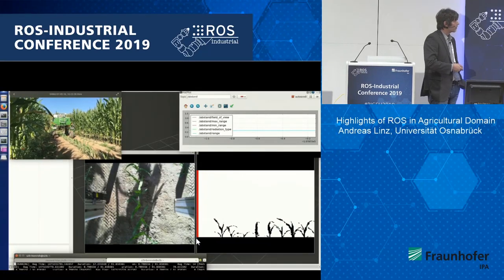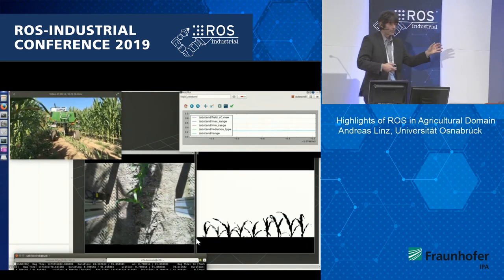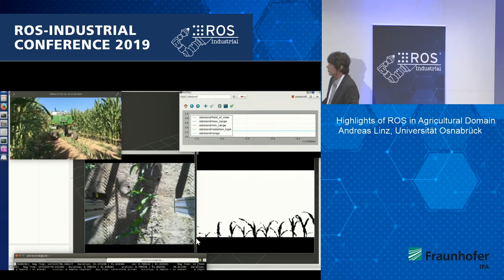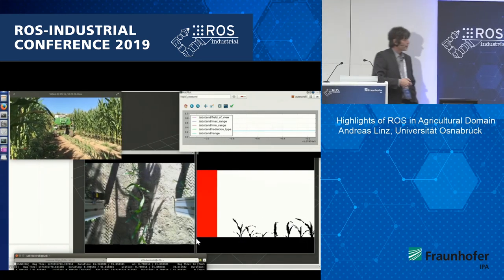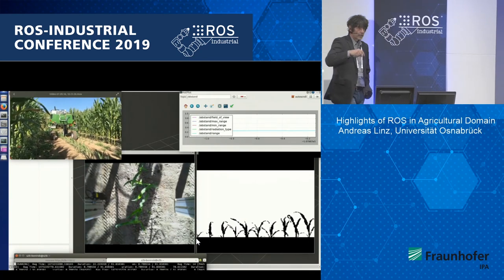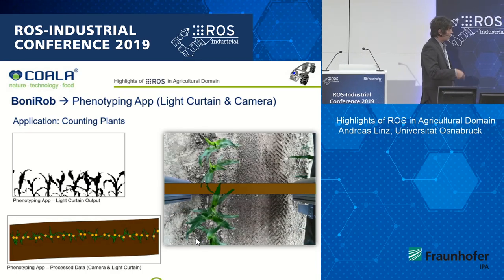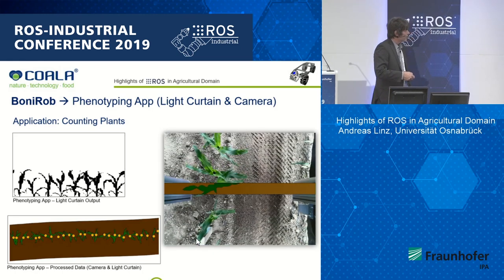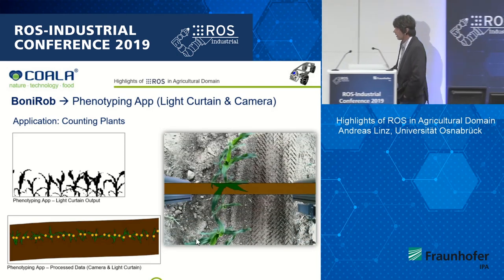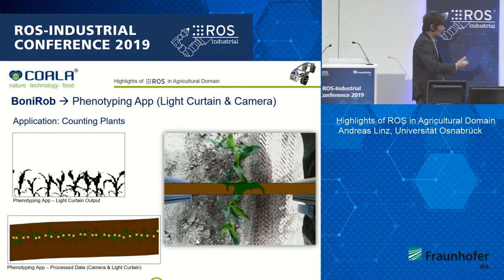Here you can see BoniRob driving autonomously over the row, using the laser scanner in the front to detect the row and drive in the middle. The light curtain scans plants from the side producing binary images visible on the right, while a top sensor measures plant distance using triangulation. We also fuse camera data with light curtain data to count plants on the field — important for breeders to know how many plants are living versus damaged or dead.